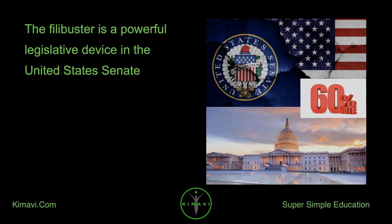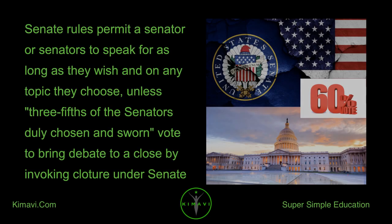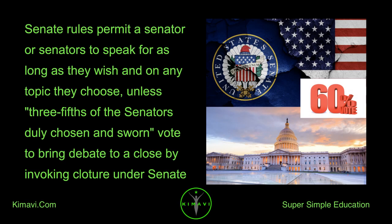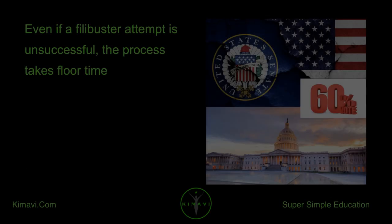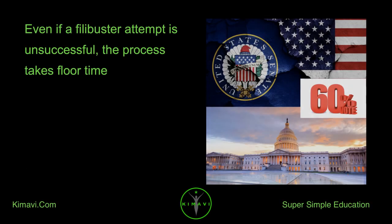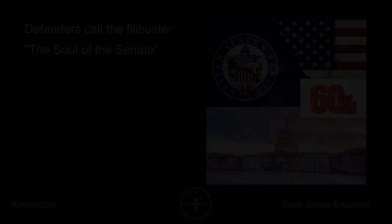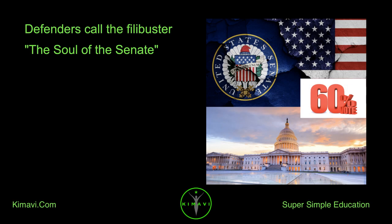The filibuster is a powerful legislative device in the United States Senate. Senate rules permit a senator or senators to speak for as long as they wish and on any topic they choose, unless three-fifths of the senators duly chosen and sworn vote to bring debate to a close by invoking cloture under Senate Rule XXII. Even if a filibuster attempt is unsuccessful, the process takes floor time. Defenders call the filibuster the soul of the Senate.